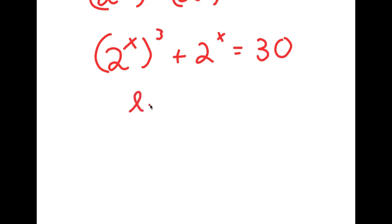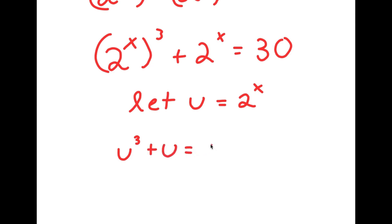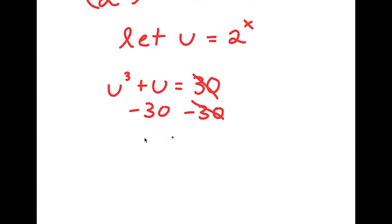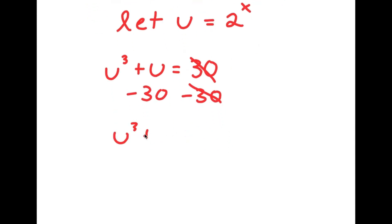Now I'm going to let the variable u equal 2 to the power of x. So if I substitute in u for 2 to the power of x, I get u to the power of 3 plus u is equal to 30. And now I can subtract 30 on both sides, so I get u to the power of 3 plus u minus 30 is equal to 0.